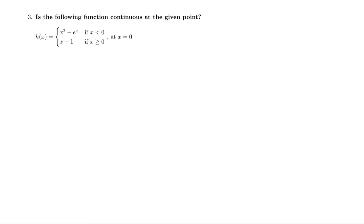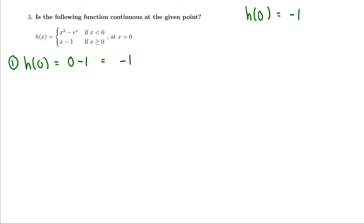One more question. Now we have a piecewise function. We're looking at h of x, where if x is less than zero the function is x squared minus e to the x, and if x is greater than or equal to zero the function is x minus one. We're looking for continuity at x equals zero. First, what is h of zero? Since x equals zero, we use x minus one, so h of zero is zero minus one, which equals negative one. So h of zero is defined and equal to negative one.